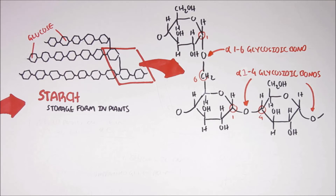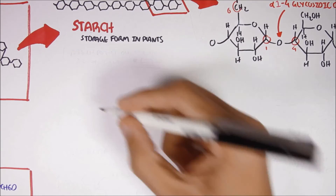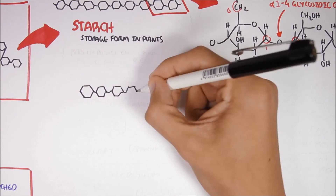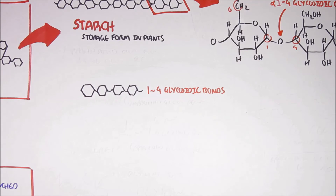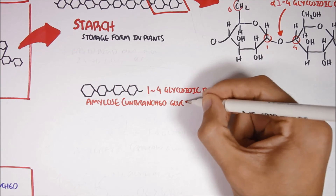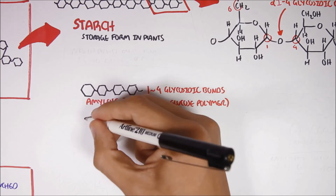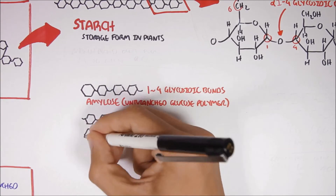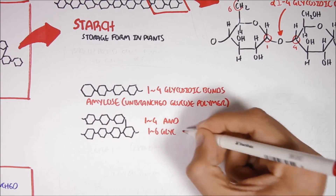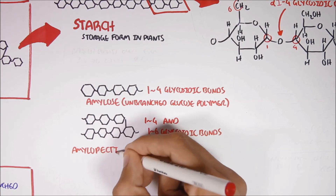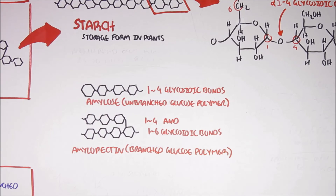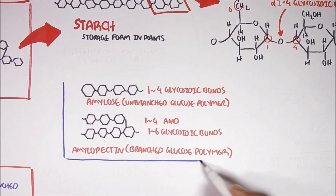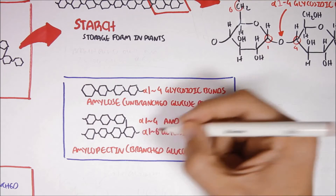Starch has two forms — it can be branched or unbranched. If starch is unbranched, consisting only of a chain of glucose linked by alpha-1,2,4 glycosidic bonds, it is referred to as amylose. If starch is branched, it contains both alpha-1,2,4 and alpha-1,2,6 glycosidic bonds between glucose, and is referred to as amylopectin. Amylose and amylopectin are two forms of glucose polymers.